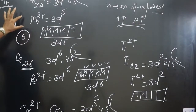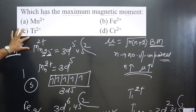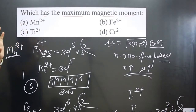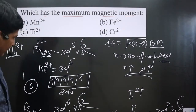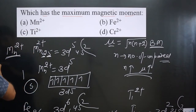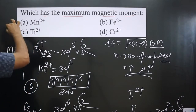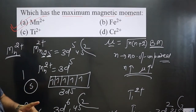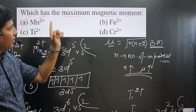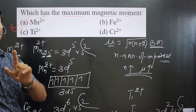In summary, the maximum number of unpaired electrons possible in the d orbital is five, and Mn²⁺ already achieves this. The higher the number of unpaired electrons, the higher the magnetic moment value. Therefore, Mn²⁺ has the maximum magnetic moment. If you liked this video, please share and subscribe to the channel.